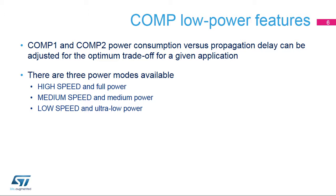The high-speed mode is preferred for power conversion applications, for example a motor control design, while ultra-low-power mode is the right choice for battery-powered applications where reaction times are not critical, for example in PIR sensor monitoring.